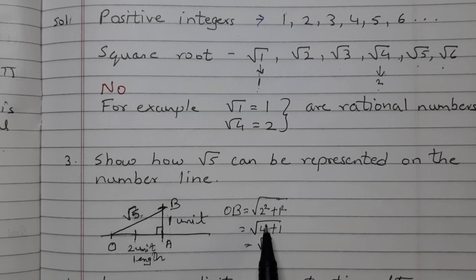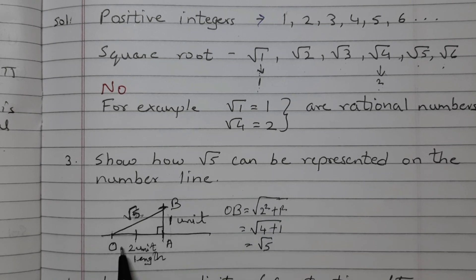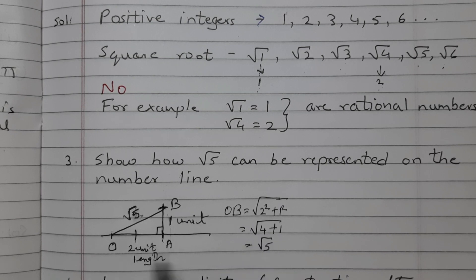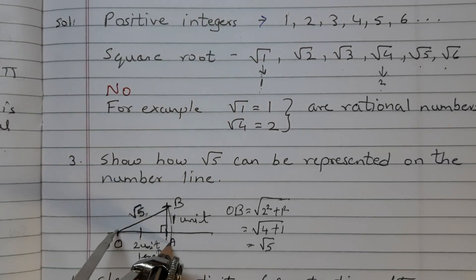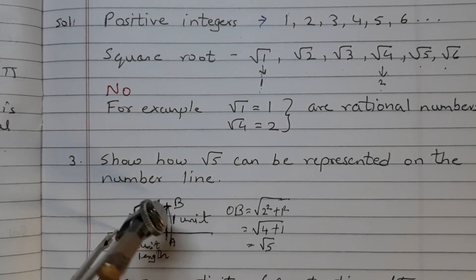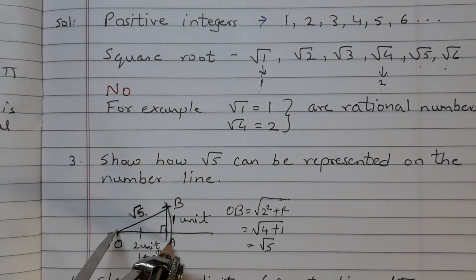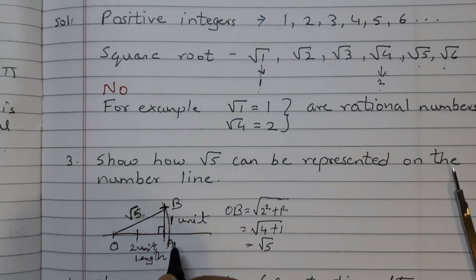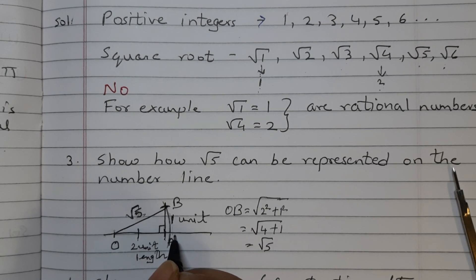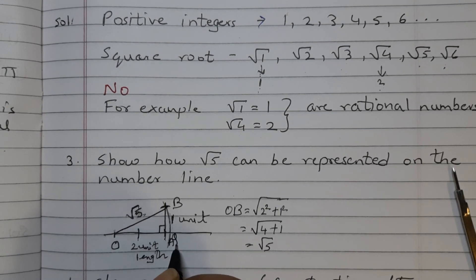Now OAB is a right angled triangle. Using the Pythagoras theorem, we can find out OB. OB equals root of 2 squared plus 1 squared. That is root 4 plus 1 or root 5. So this length here OB is root 5. Using a compass with center O and radius OB, draw an arc which intersects the number line at point Q. This point is Q which corresponds to root 5.